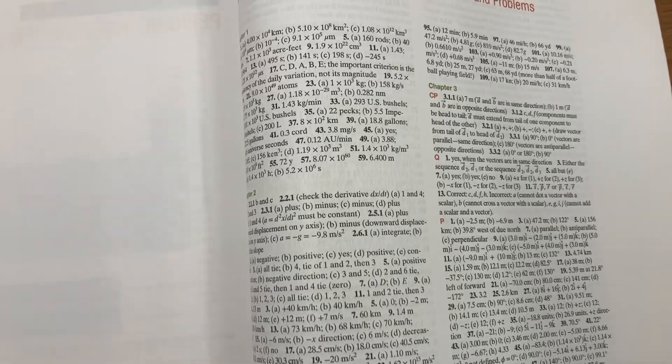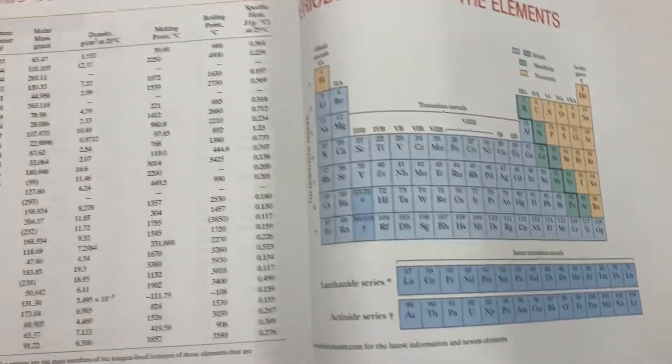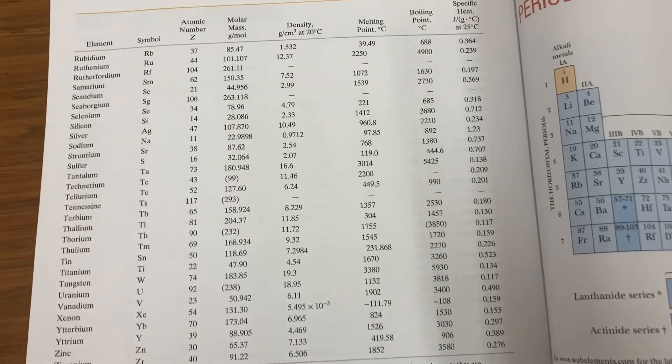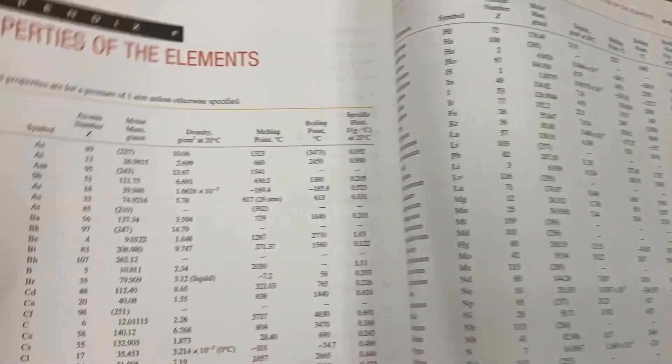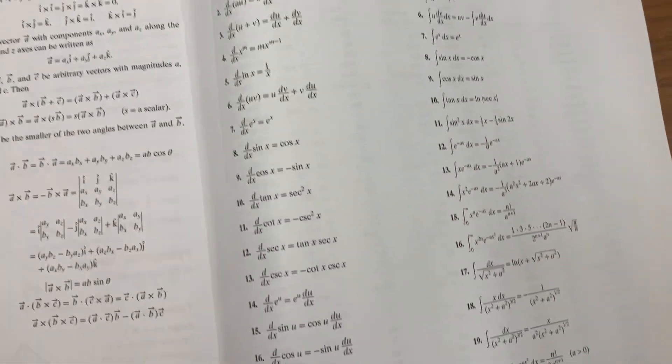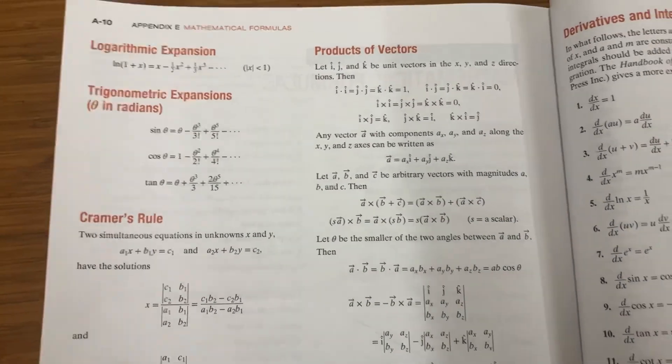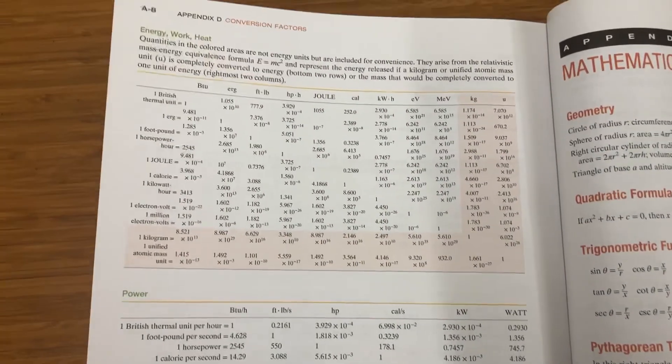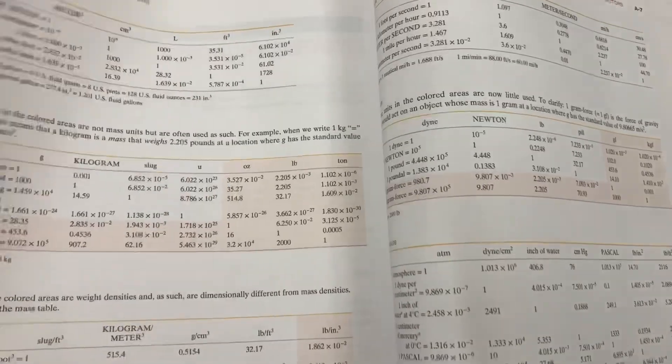But what they do have is a periodic table. They got tables of properties and stuff - properties of the elements that might be useful. They got derivatives and integrals which might be useful. They got all sorts of different things like mathematical formulas, cheat sheets.